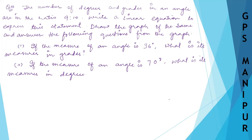We are doing Exercise 4.2, question number 10. The question states: the number of degrees and grades in an angle are in the ratio 9 is to 10. Find a linear equation to express this statement.